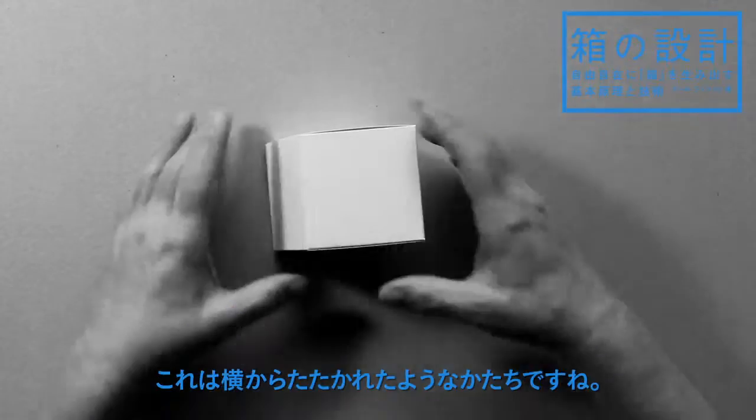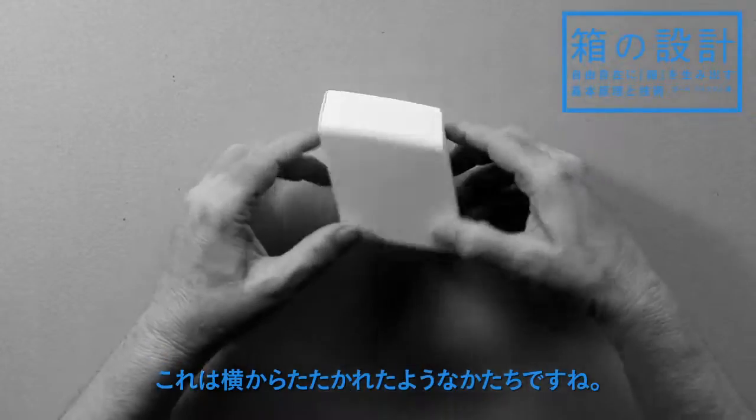Then you can take a cube and almost knock it to the side so it looks like this, and it can stand in many interesting ways on squares or on these rhombuses.